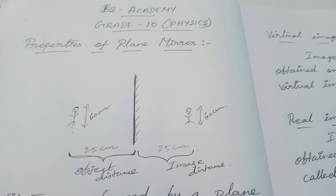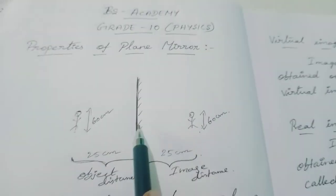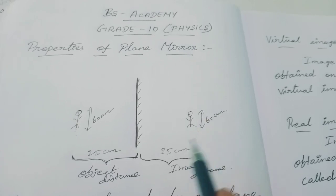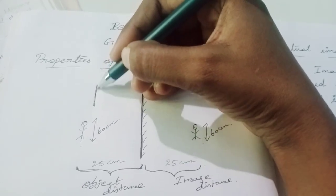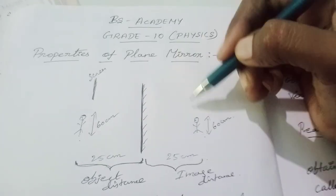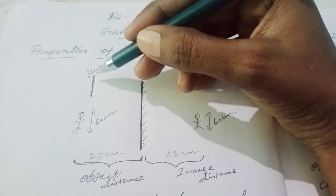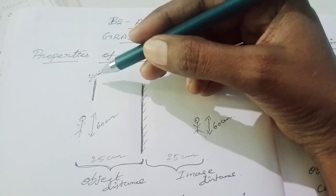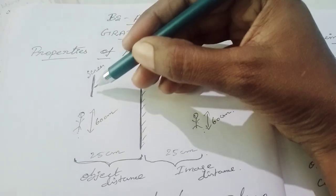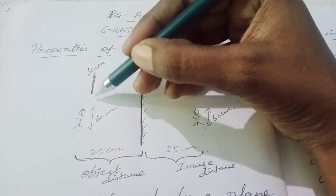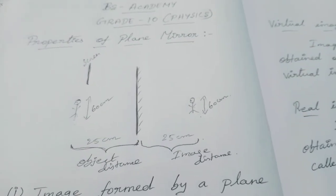Now, where can we see the image through the mirror? The image is formed behind the mirror. If you place any screen in front of the mirror, can you project this image onto the screen? No, we cannot project the image onto the screen. An image which cannot be obtained on a screen is called a virtual image.